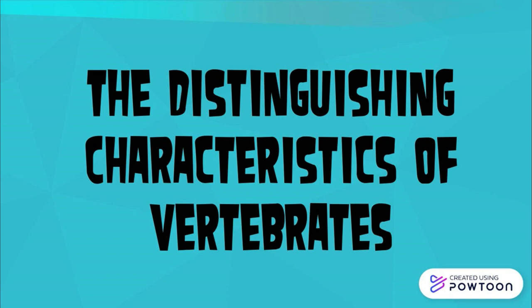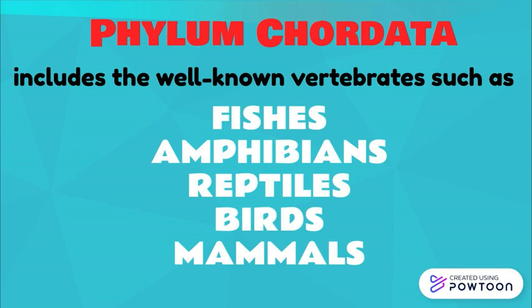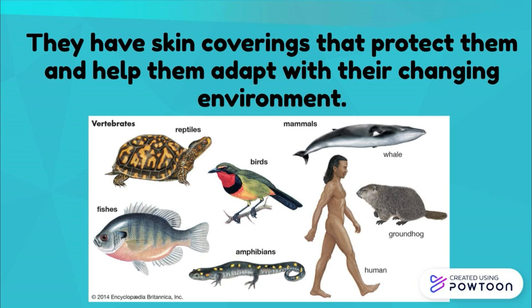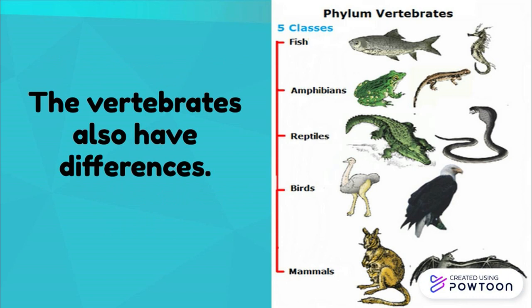The distinguishing characteristics of vertebrates: Phylum Chordata includes the well-known vertebrates such as fishes, amphibians, reptiles, birds, and mammals. All vertebrates have backbones. They have skin coverings that protect them and help them adapt to their changing environment. They reproduce sexually and have large bodies. Vertebrates also have differences among themselves.